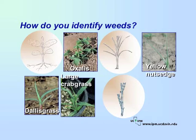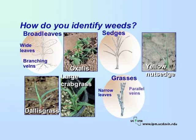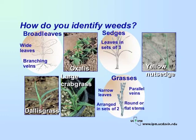There are three general categories of weeds: broad leaves, grasses, and sedges. Broad leaves, such as oxalis, have wide leaves of various shapes with veins branching out in various directions. Grasses, such as Dallas grass and large crabgrass, have narrow leaves with parallel veins arranged in sets of two with round or flattened stems. Sedges, such as yellow nutsedge, have leaves arranged in sets of three with stems triangular in cross-section.